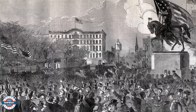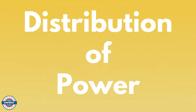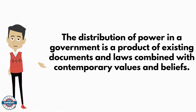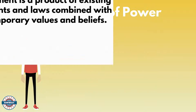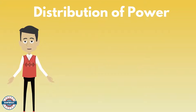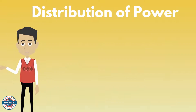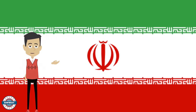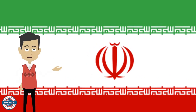Change is the result of conflict. Another connecting theme is the distribution of power. The distribution of power in a government is a product of existing documents and laws combined with contemporary values and beliefs. For example, in the country of Iran, the government is run as a theocracy, as it holds strict principles based on the religion of Iran.